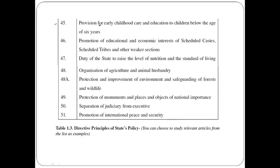Article 45 is provision for early childhood care and education to children below the age of six years. Article 46 is promotion of education and economic interests of Scheduled Castes, Scheduled Tribes, and other weaker sections. Article 47 is the duty of the state to raise the level of nutrition and the standard of living. Article 48 is organization of agriculture and animal husbandry. Article 48A is protection and improvement of environment and safeguarding of forests and wildlife. Article 49 is protection of monuments and places and objects of national importance. Article 50 is separation of judiciary from executive. Article 51 is promotion of international peace and security.